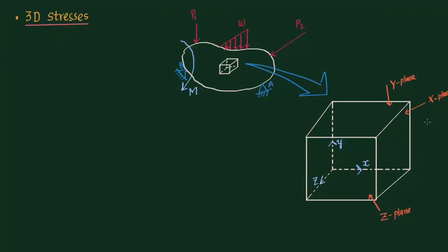The x-plane will have three stresses acting on it: one normal stress along the x-axis (σxx), one tangential or shear stress along the y-axis (τxy), and one shear stress along the z-axis (τxz). The first suffix letter indicates on which plane the stress is acting, and the second letter indicates the direction. So on the x-plane we have one normal stress and two shear stresses.